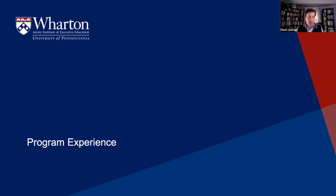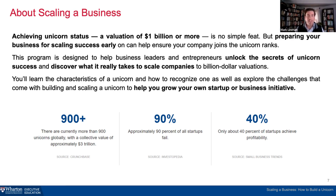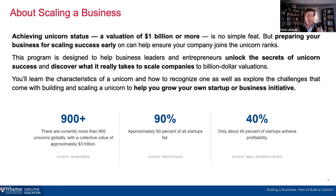Achieving unicorn status — getting your company to a valuation of a billion dollars or more — is no simple feat. But if you prepare for that success early, you can ensure your company joins that unicorn rank. In the media, we often hear about startups getting bought for a billion or two billion dollars, but what doesn't get as much attention is that approximately 90 percent of all startups fail, and only about 40 percent achieve profitability.